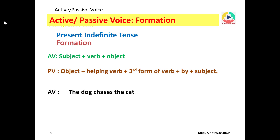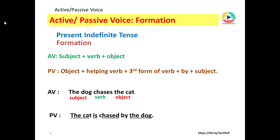Example: active voice — the dog chases the cat. Dog is the subject, chases is the verb, cat is the object. In passive voice: the cat is chased by the dog. The subject is the doer of the action, the verb is the action being done, and the object is the thing on which the action is done.